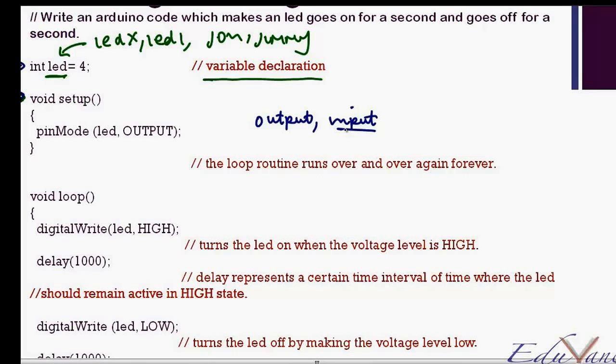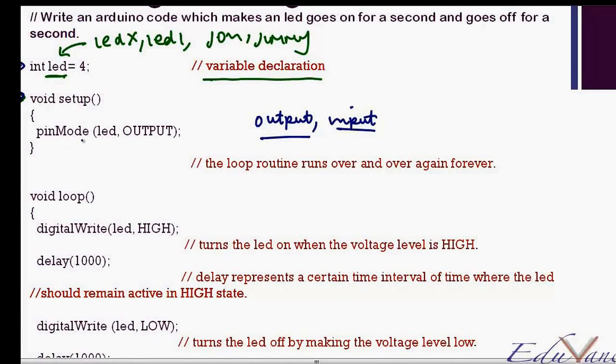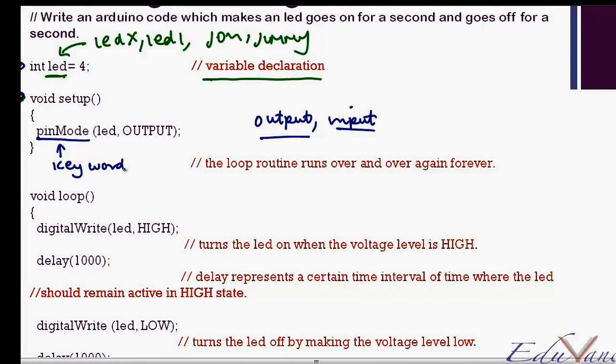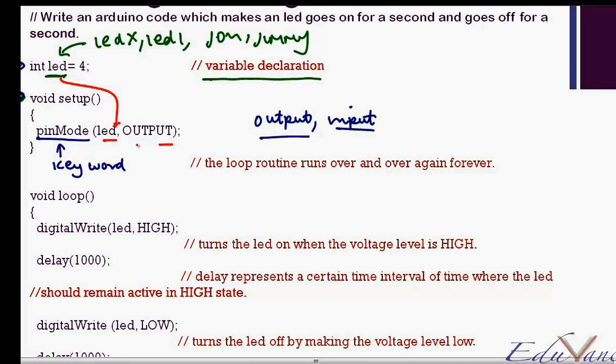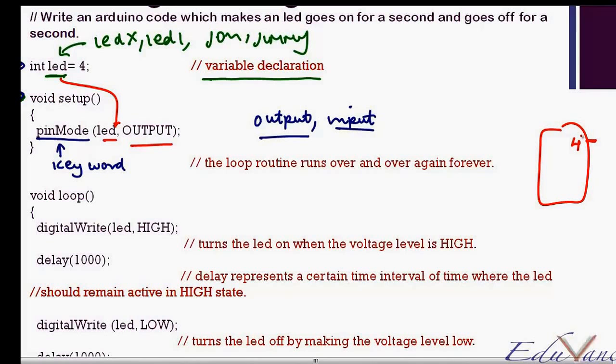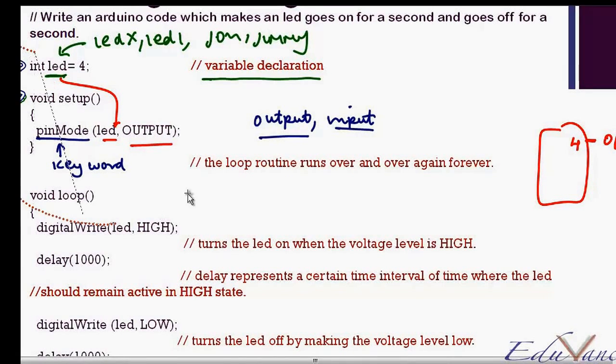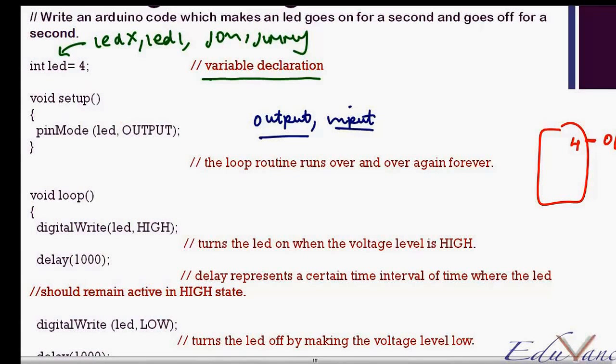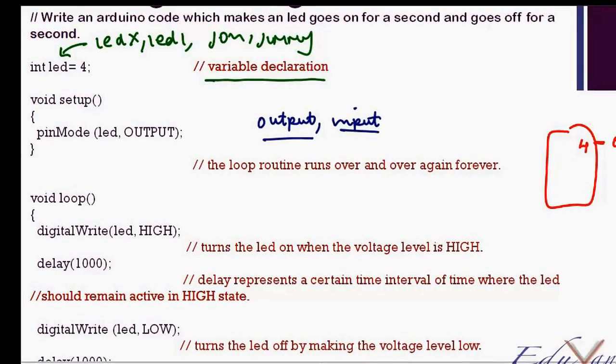So we say that pinMode—this is a key function or keyword—that LED, that is here, is of the type output. So on your Arduino board, pin number 4 now becomes an output. Okay, that said, I have done my setup. Now let's see the basic program for the blinking of the LED.